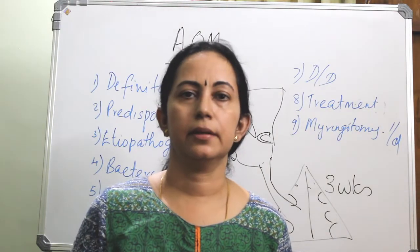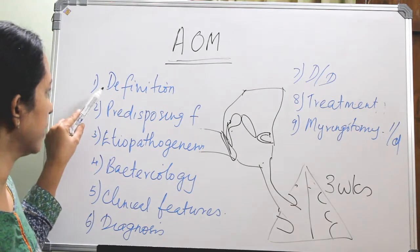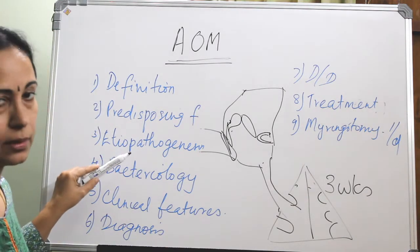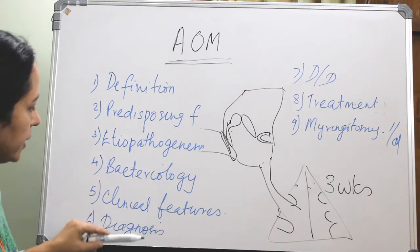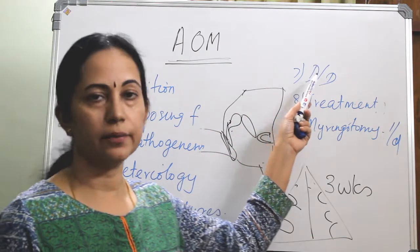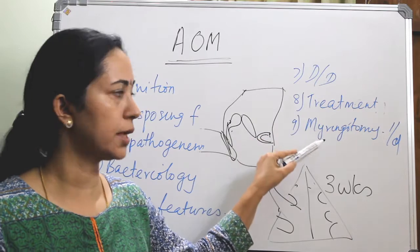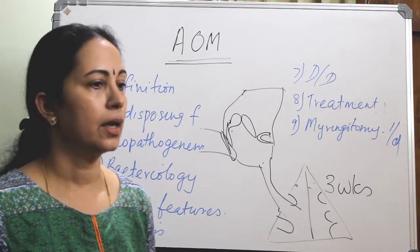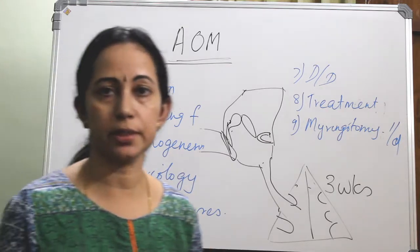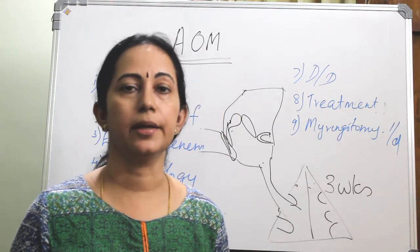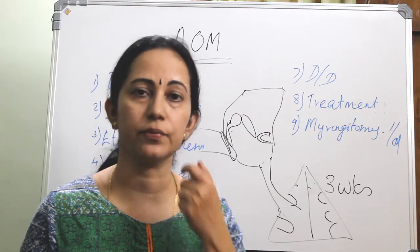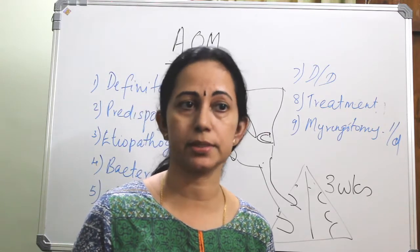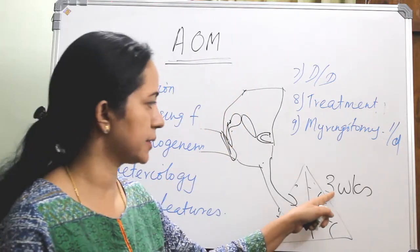We will discuss acute otitis media under these headings: definition, predisposing factors, etiopathogenesis, causative organisms, clinical features, diagnosis, differential diagnosis, treatment, and indications of myringotomy. The definition: it is a pyogenic infection of the middle ear cleft of less than three weeks duration. Acute means less than three weeks — that is important.